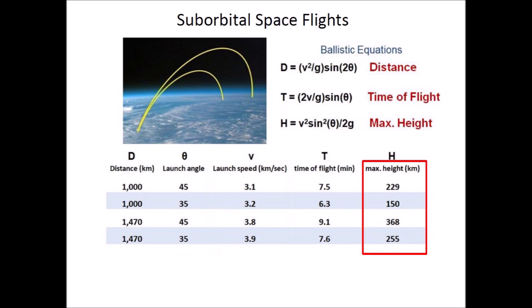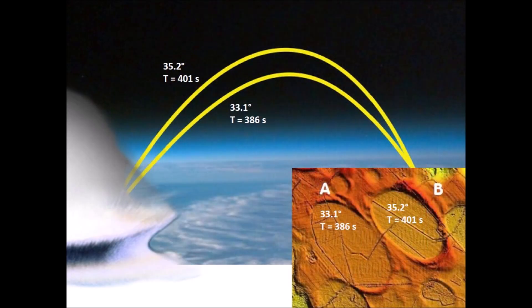The heights of the ballistic trajectories make clear that all the ejected ice boulders were launched in suborbital space flights above the Earth's atmosphere, which only extends to 100 kilometers above the surface. Traveling in the vacuum of space, the ejected ice boulders were not affected by atmospheric friction until their re-entry. The ballistic equations also make it possible to determine the time of emplacement of the bays. For example, bay A was created by an impact inclined at 33.1 degrees, corresponding to a flight time of 386 seconds, and bay B was created 15 seconds later by an impact at 35.2 degrees and a flight time of 401 seconds. The saturation bombardment by the ice boulders lasted from about 6 to 9 minutes after the extraterrestrial impact on the Laurentide Ice Sheet.